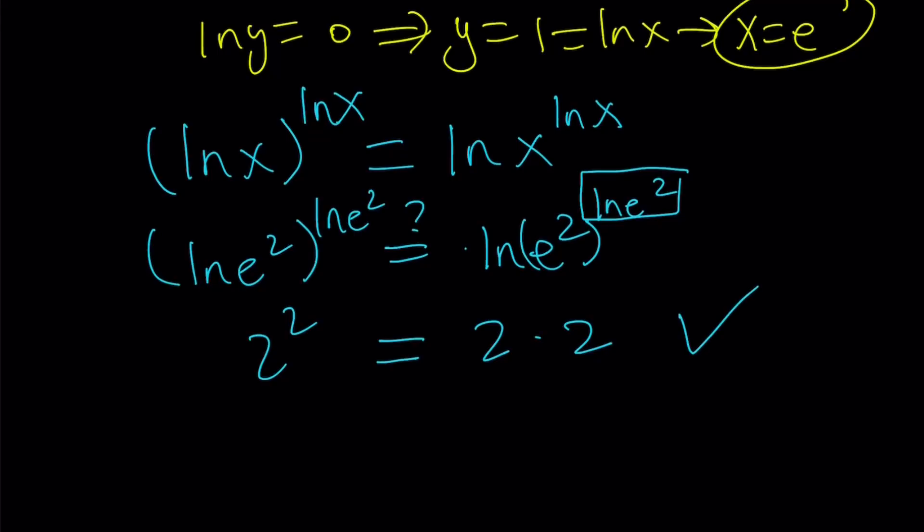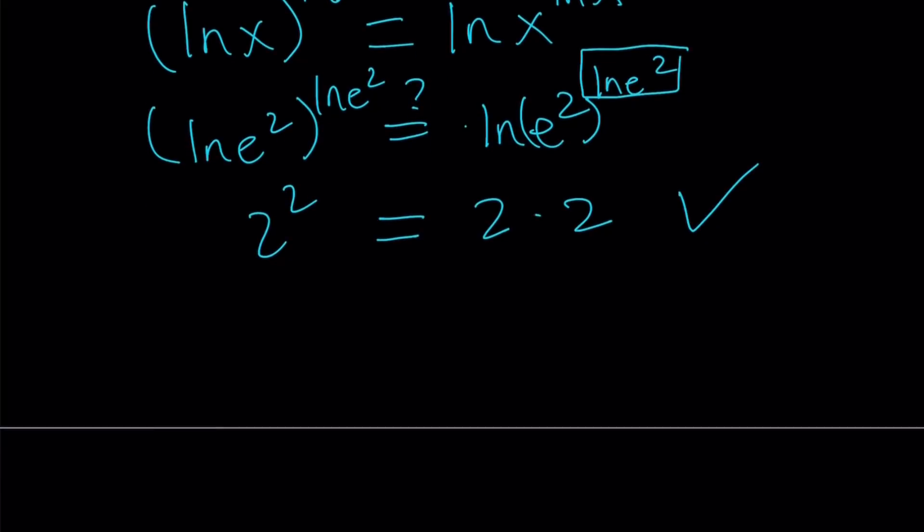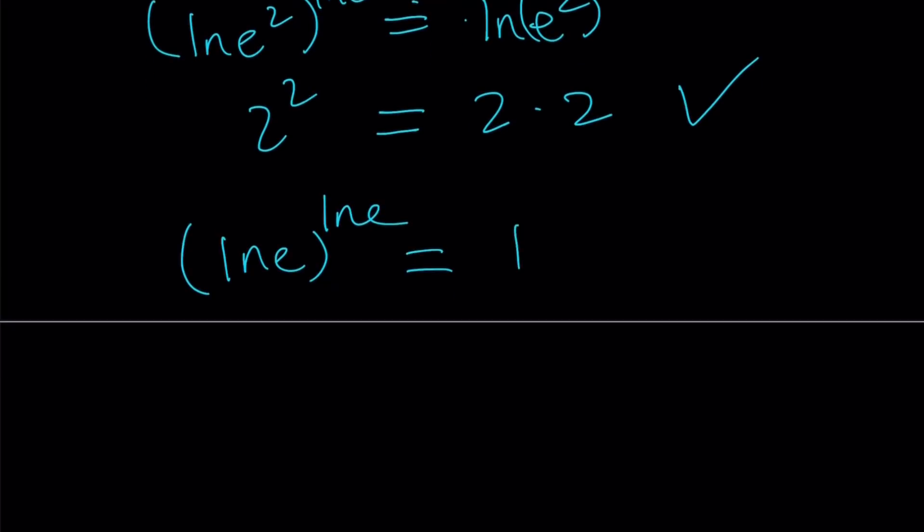So e squared works. And let's go ahead and test x equals e. Same way, ln e to the power ln e gives us one to the power one, which is one. But on the other hand, if you have ln e to the power ln e, then ln e, you can just move to the front and write it as ln e times ln e. And that is going to be one times one, which is equal to one. Great.